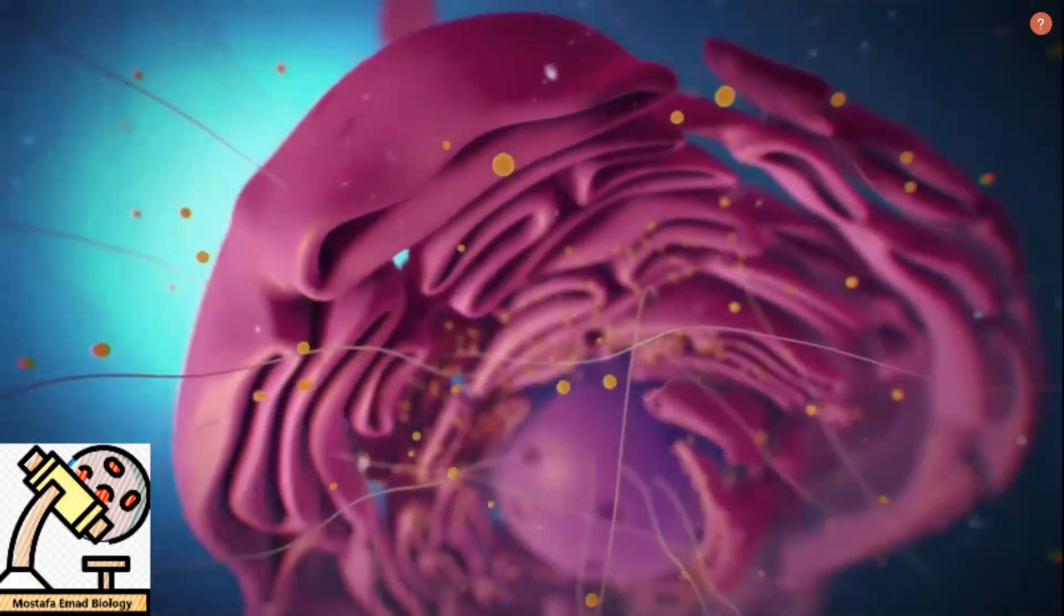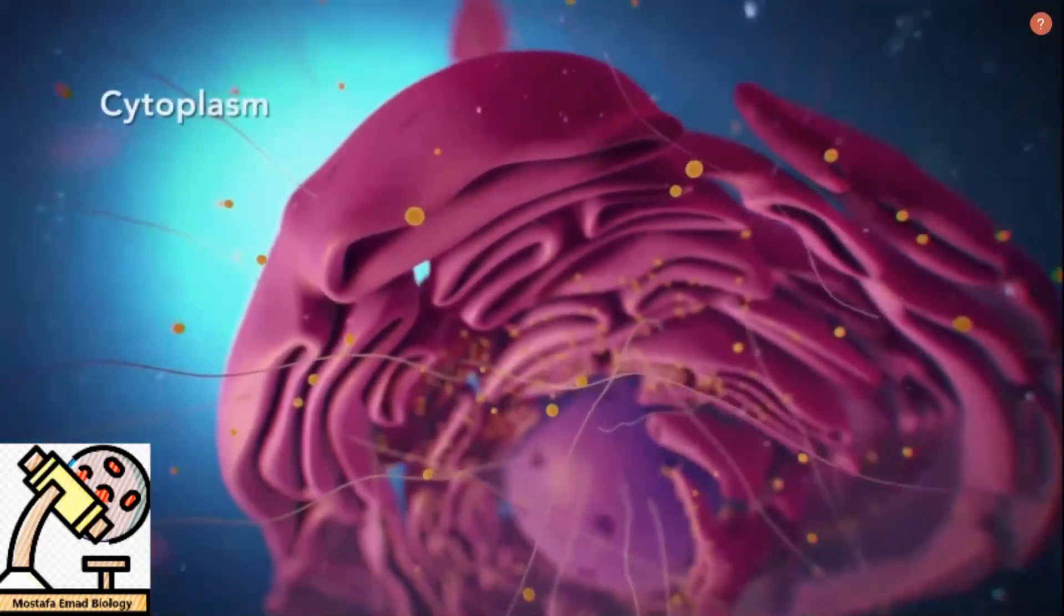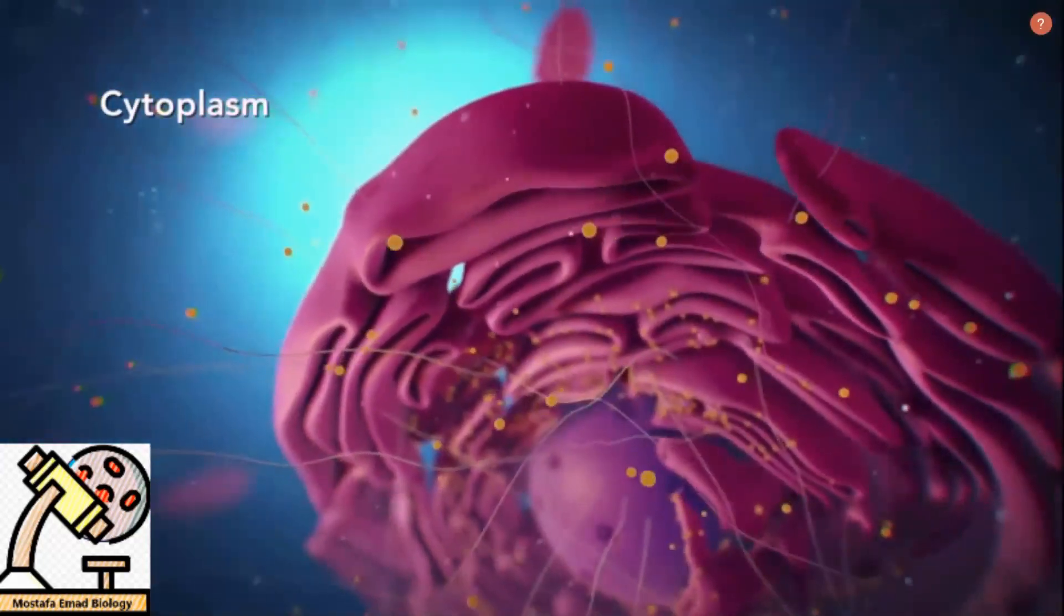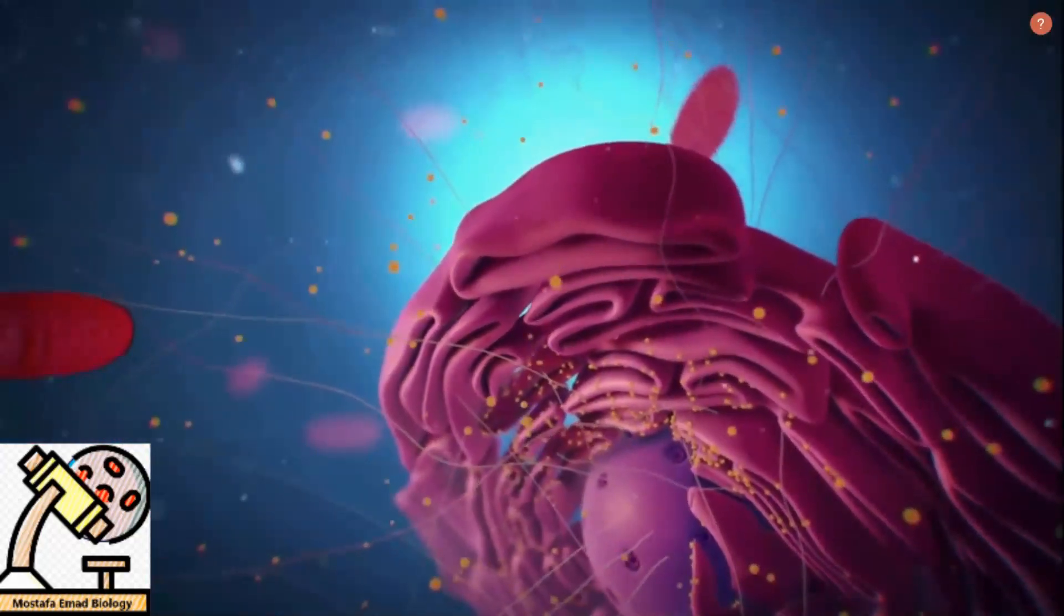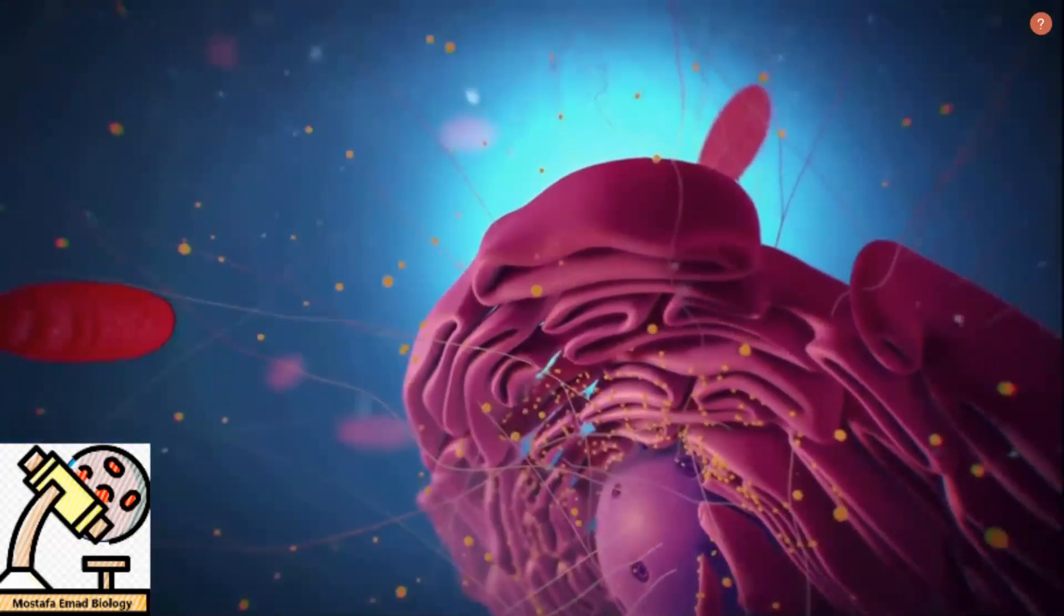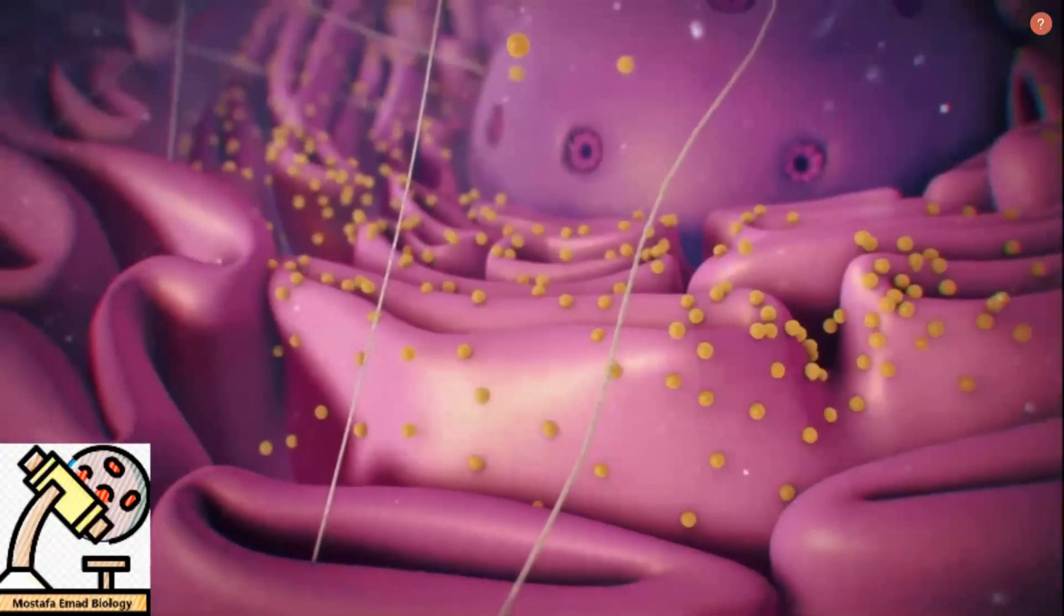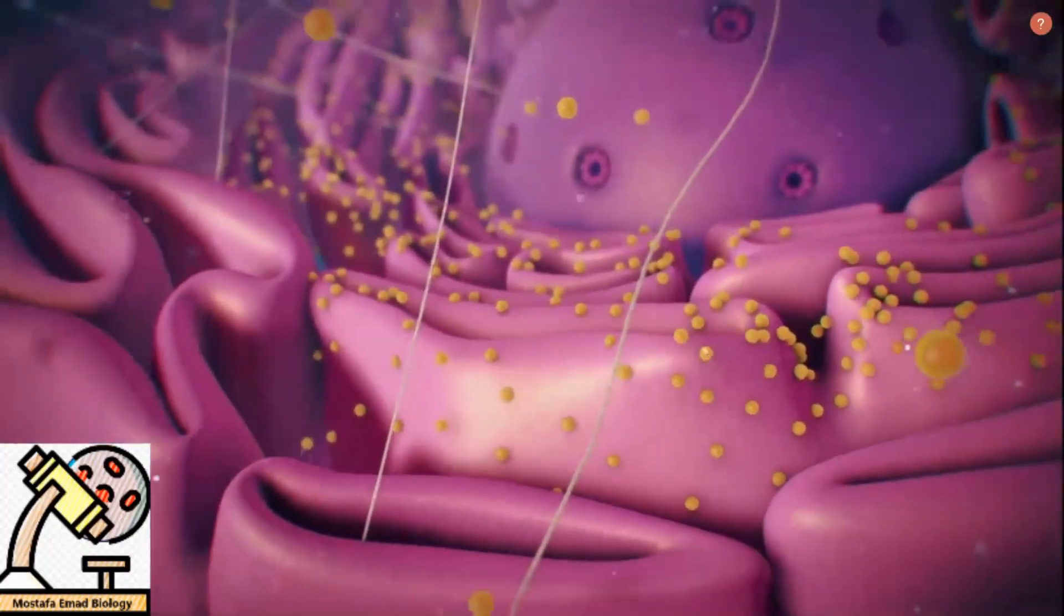Outside the nucleus, the ribosomes and the rest of the organelles float around in the cytoplasm, which is the jelly-like substance. Ribosomes may wander freely within the cytoplasm or attach to the endoplasmic reticulum, sometimes abbreviated as ER.